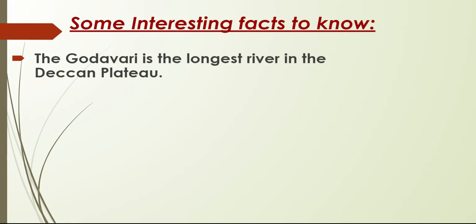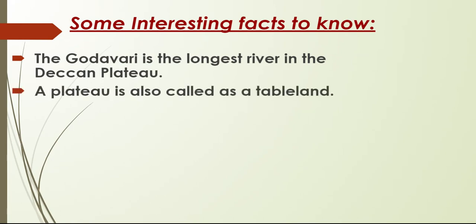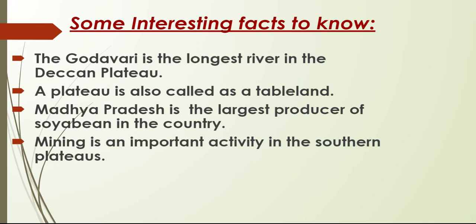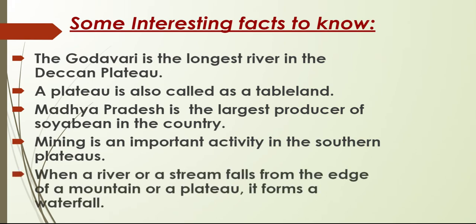Some interesting facts: the Godavari is the longest river in the Deccan Plateau. A plateau is also called a tableland. Madhya Pradesh is the largest producer of soybean in the country — that's an extra fact! Mining is an important activity in the Southern Plateaus. When a river or a stream falls from the edge of a mountain or a plateau, it forms a waterfall — this definition is on page 38 of your book.